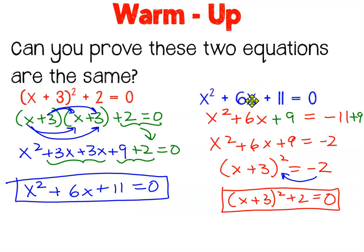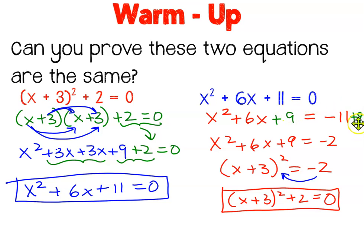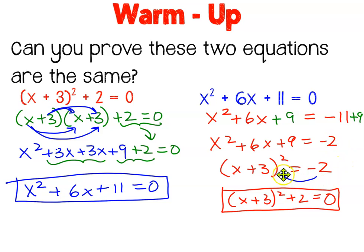If you use the complete the square method, you would start by moving the positive 11 to the right-hand side, changing it to negative 11. Then in the empty space, complete the square by taking half of b and squaring it — half of 6 is 3, and 3 squared is 9. Don't forget you have to add it to both sides; forgetting the plus 9 on the right-hand side is the most common mistake. When I combine these terms I get negative 2, and when I rewrite my trinomial as a perfect square factor, I get x plus 3 quantity squared. I then move the negative 2 back to the left-hand side to get positive 2, resulting in my original red equation.